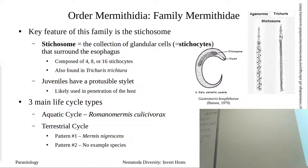We started our nematode talk with the diversity, focusing on those nematodes that utilize insects. These are those that utilize the insects — required not as an intermediate host, but as a definitive host, or in cases where it grows and develops inside that host and the adult comes out and drops the eggs. We broke this up into three different life cycles.